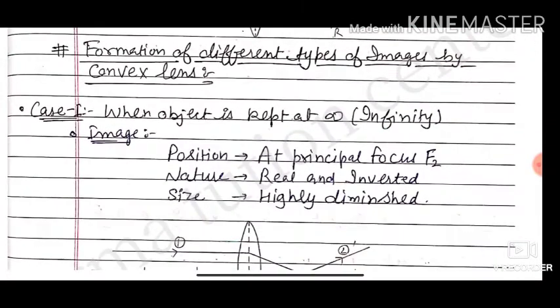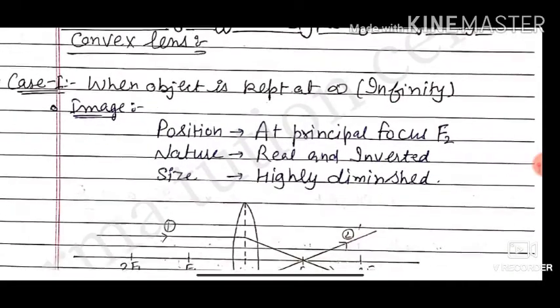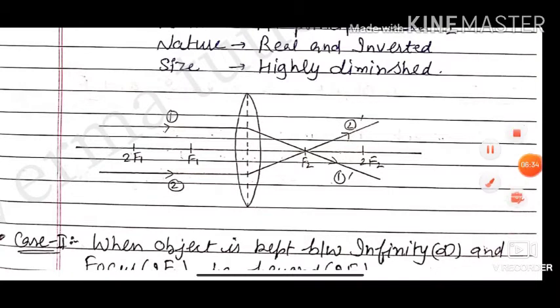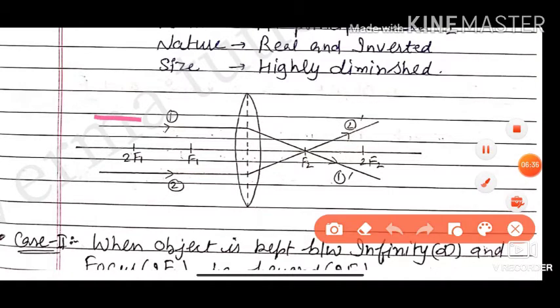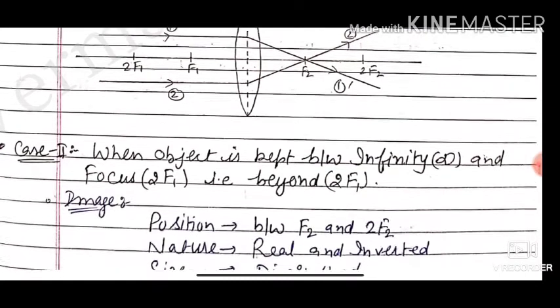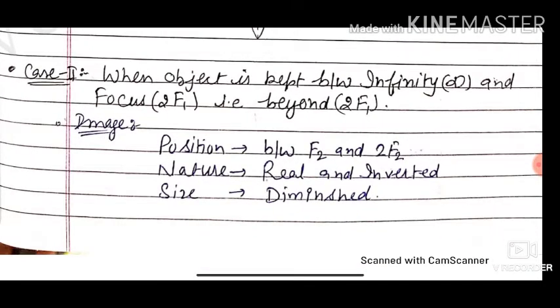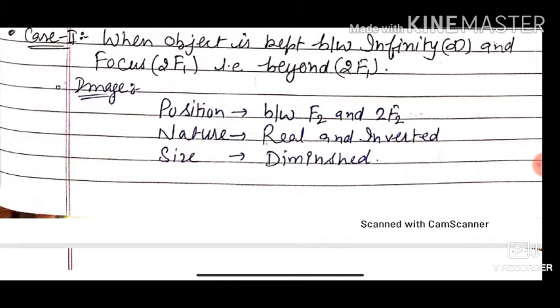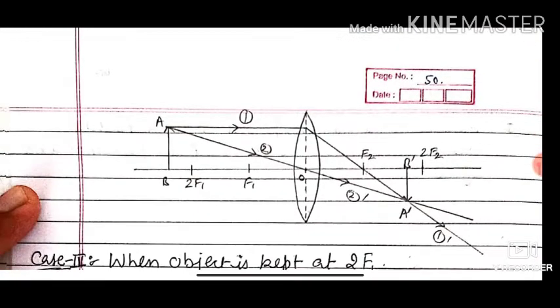Formation of images by convex lens at different object positions. Case 1: when the object is at infinity, the image is real, inverted, and highly diminished to point size at F2. Case 2: when the object is between infinity and 2F1 (beyond 2F1), the image is between F2 and 2F2, real, inverted, and diminished.